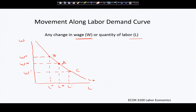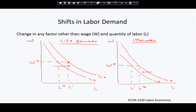Movement along the labor demand curve is motivated by a change in wage or labor — simply one of the two variables that form the curve — whereas a shift of the labor demand curve is motivated by a change in any other factor that could possibly influence that marketplace.